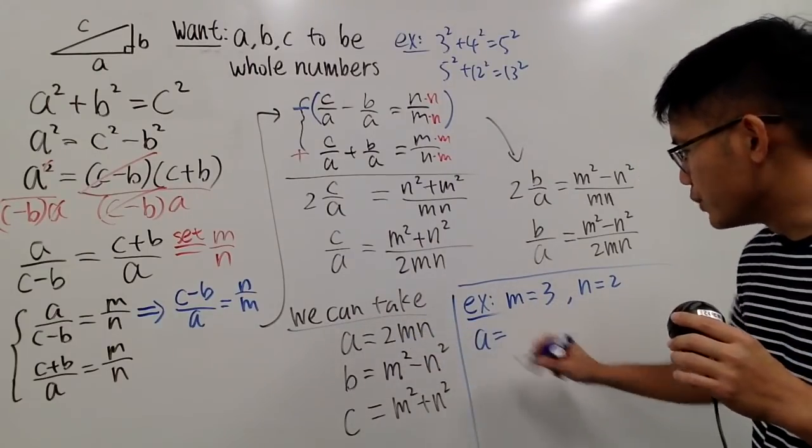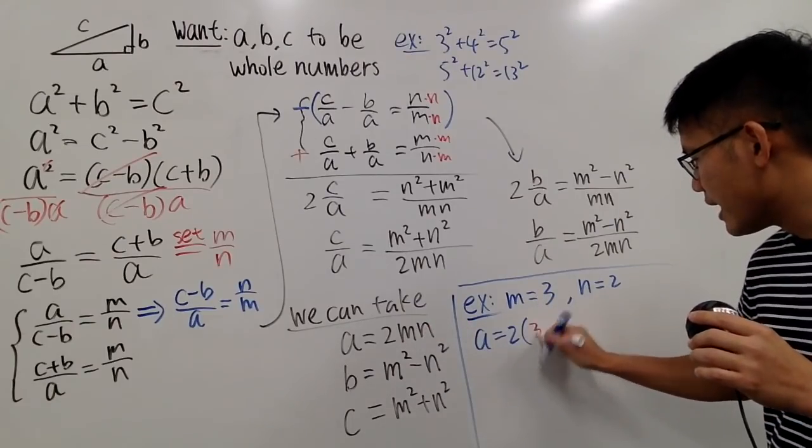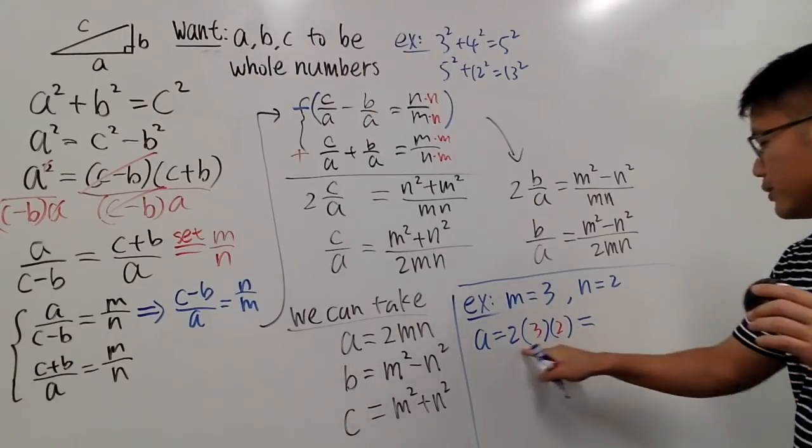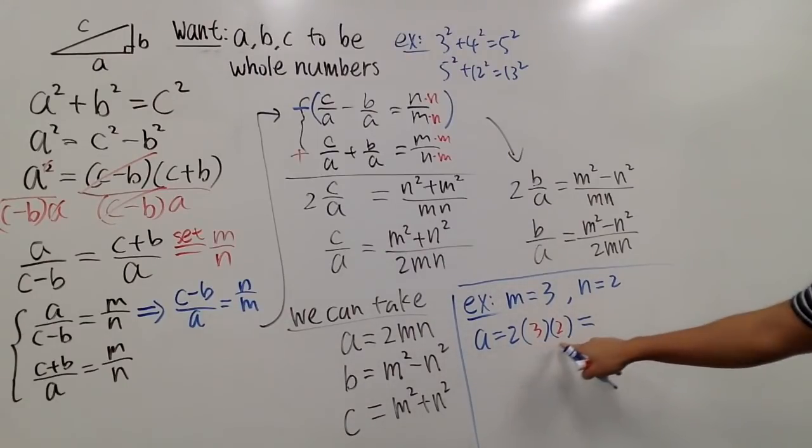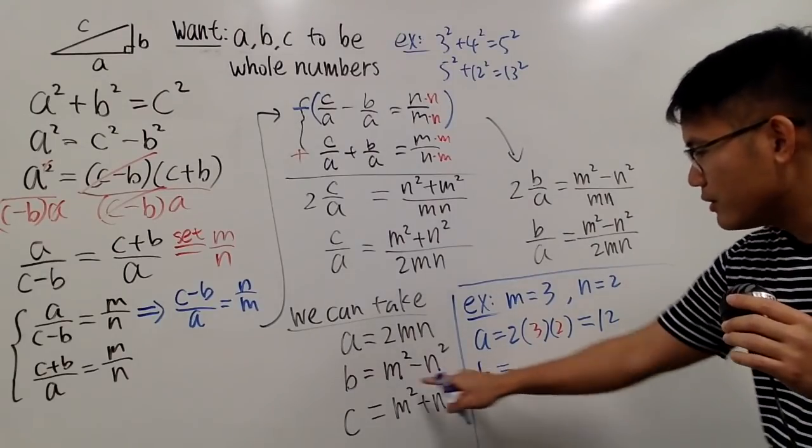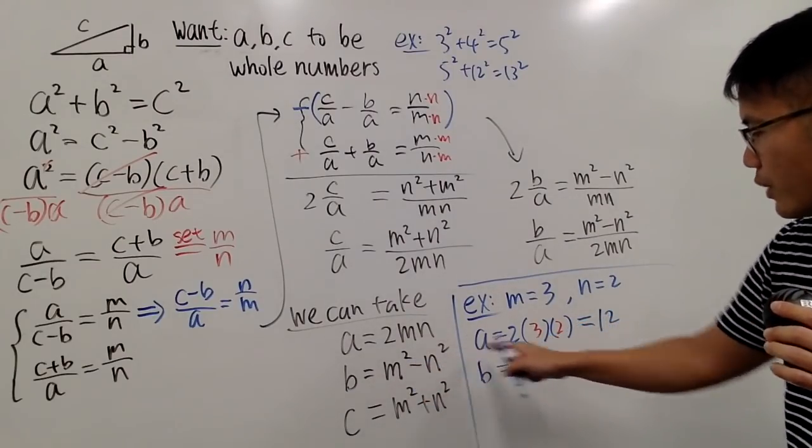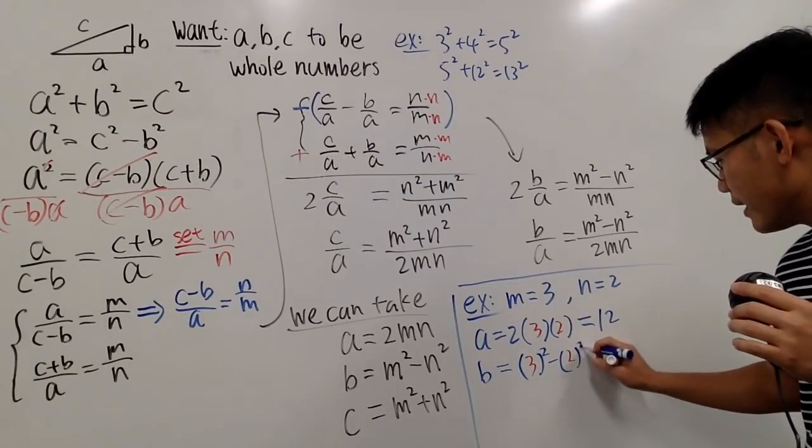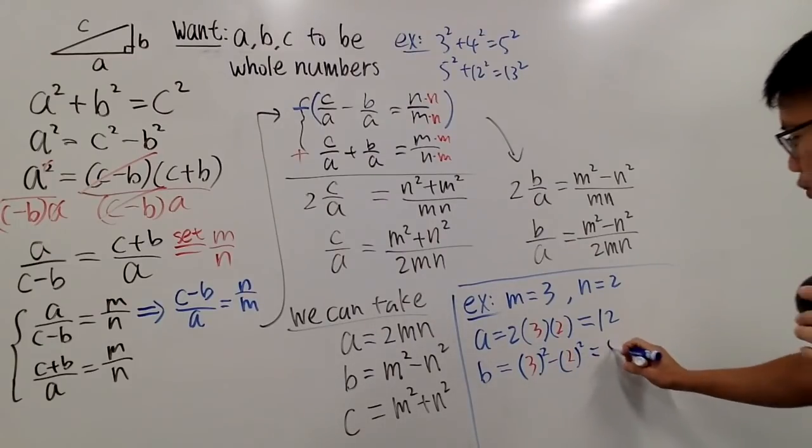A, based on this, we get 2 times M, which is 2 times 3, and then times N, which is another 2 right here. 2 times 3 is 6, times 2 is 12. And next, take B to be M squared minus N squared, which is 3 squared minus 2 squared. And you work this out. That's 9 minus 4, which is 5.